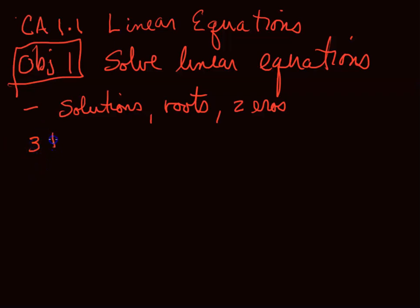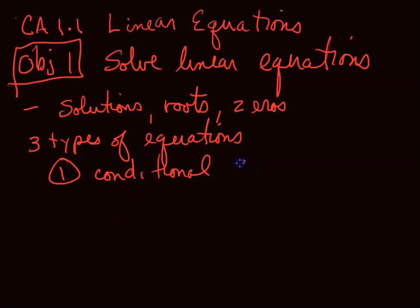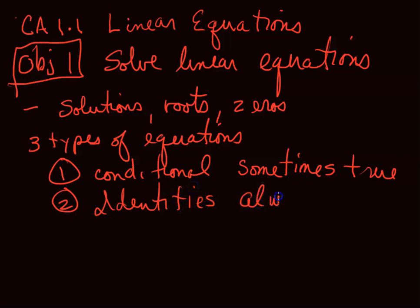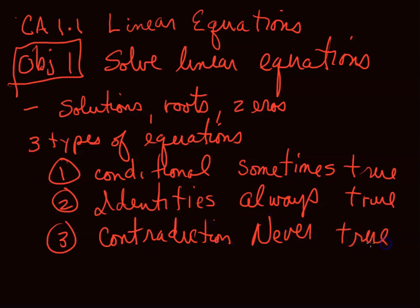There are three types of equations. The first type are the conditional equations, which is what we expect. They are true sometimes. If you give me the right number, then it will be true. If you give me the wrong number, then it won't. There are identities, and these are always true. Each side is really identical. The last one, never true, is called a contradiction. It doesn't matter what you put in for the variable, it won't work.